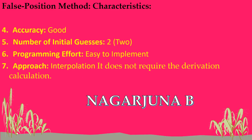The next characteristic is accuracy: good. Whatever root we find using this method will be accurate — it will be almost nearer to the exact root for the given equation. Then, the number of initial guesses: we require two values. As it is a bracketing method, we consider two values as the initial interval, and based on that we find the root by repeating the process.